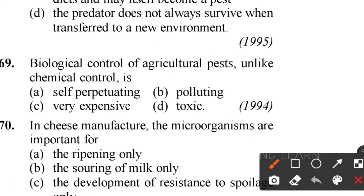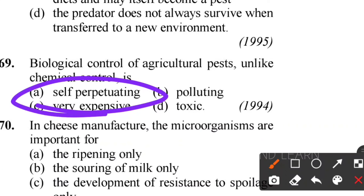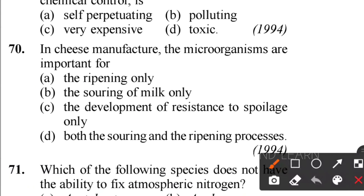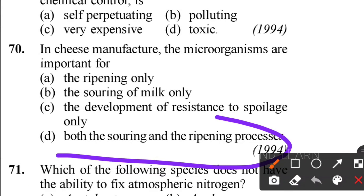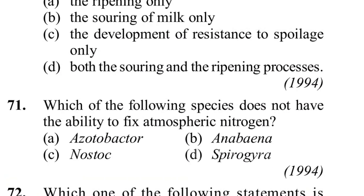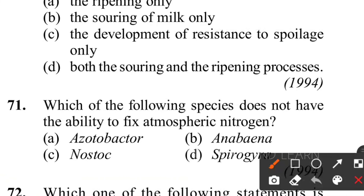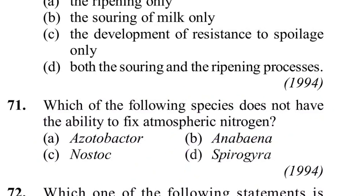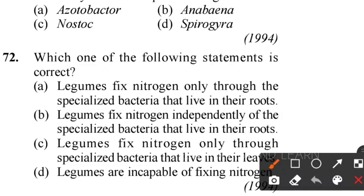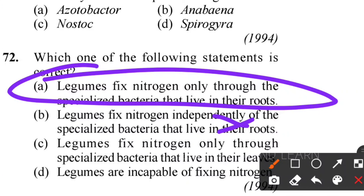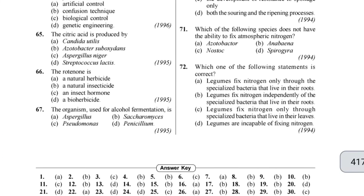Sixty-ninth question: biological control of agricultural pests is called self-perturbating - a method in which animals are employed by man to eat up insect pests. Seventieth question: in cheese manufacture, which microorganism is important? Option D - both souring and ripening processes - is the correct answer. Seventy-first question: which species does not have the ability to fix nitrogen? Spirovera does not have heterocyst, so it cannot fix nitrogen; the other three are nitrogen-fixing bacteria. Seventy-second question: which statement is correct about legumes? Legumes can fix nitrogen only through specialized bacteria living in their roots - option A is correct.